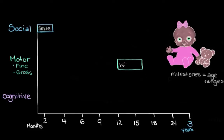Walking requires pretty good development of a few different motor skills. You need to be able to move and coordinate your arms and your legs, and be able to speed up and slow down as necessary in response to your environment. So being able to walk independently by yourself somewhere in this time range tells us that motor development is coming along pretty well.